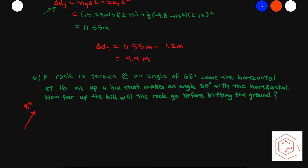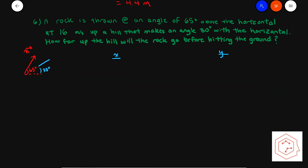Your initial velocity would be at 65 degrees above the horizontal, and you know that there's a hill the rock is landing on at 30 degrees. As shown in the previous video, we're going to be analyzing the components independently. So analyzing the question for the givens: first of all, we're given the initial velocity as well as the angle of projection.